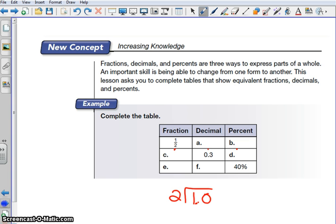So two goes into one zero times. But two goes into ten five times. We know then that our decimal answer is 0.5.